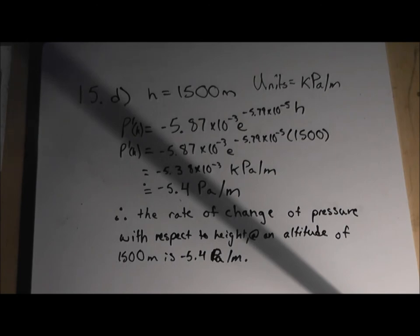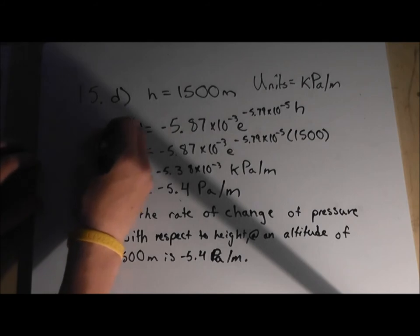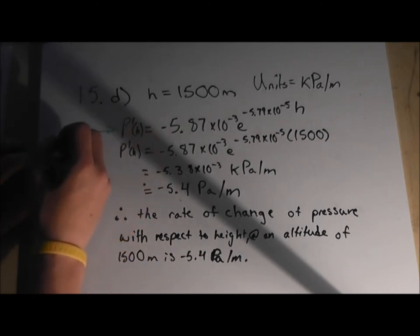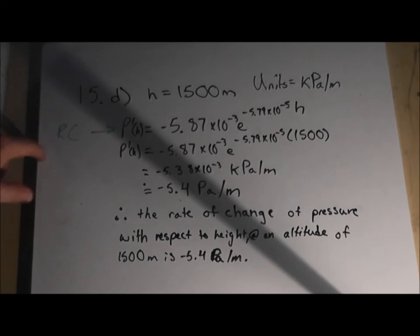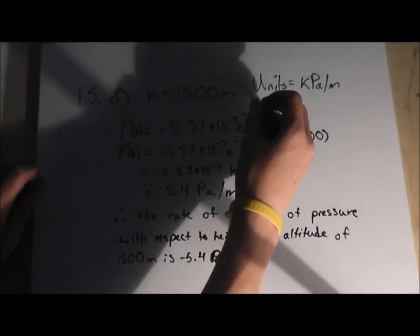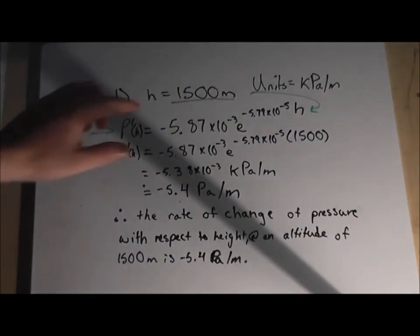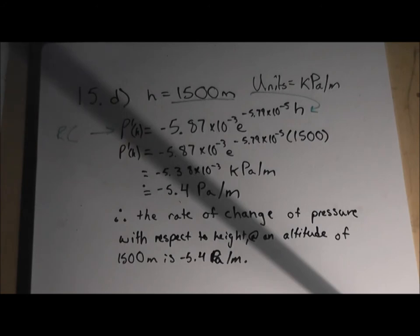15d is very similar to that of 15b. We're given our values, and all we have to do is sub in these values into an equation. This time, our equation is to find the rate of change. And that is our first derivative found in 15c. So, we simply sub in our values, and that is just 1500 meters in for h. That's all we have to sub in.